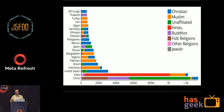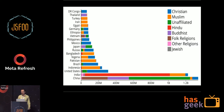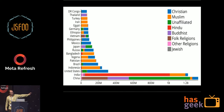This next chart breaks down the data one level further — it's a horizontal stacked bar chart. This shows you the religious breakdown of the largest 20 countries. You can see the Hindus segment is red here, and they're almost all in India, with some in Bangladesh as well.